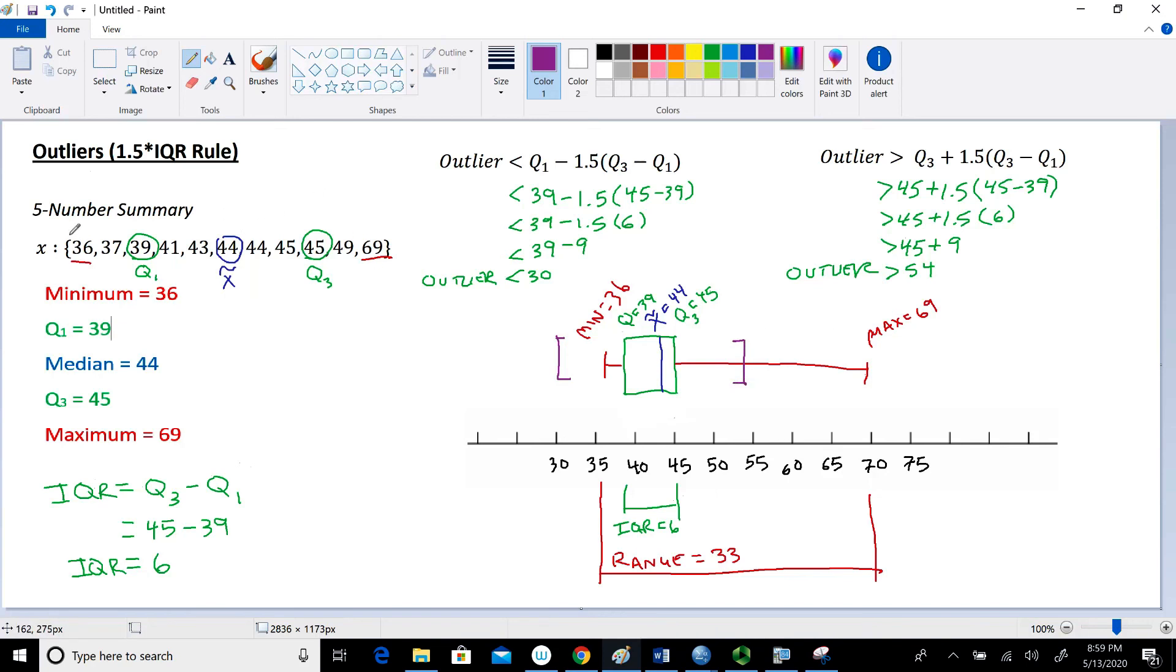I'm going to go back to the original data set so we see this. So the value of the lower fence was 30. So it ends about right there in terms of our numbers in the data set. And then our upper fence, that ends right here in terms of the numbers of our data set. So this value right here of 69, this is an outlier within our data set.